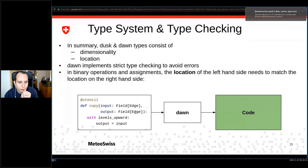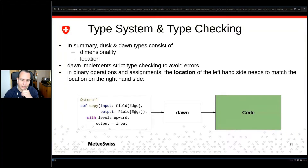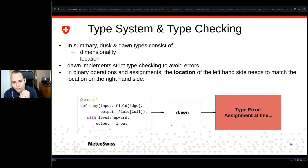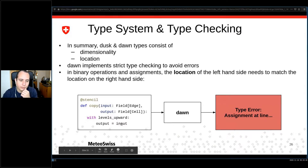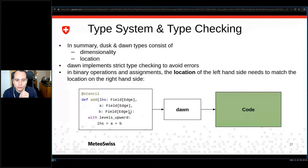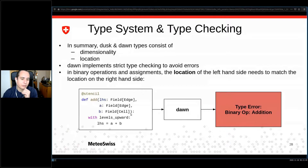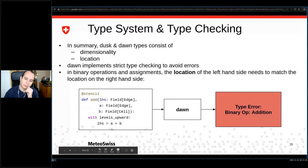Looking at type system examples: the copy stencil with both fields on edges is obviously fine and Dawn will accept it. If we try the same thing with a cell field assigned to an edge field, we get a type error: 'assignment at line X is inconsistent.' Here's a slightly more complex example: adding two fields and assigning to a left-hand side — if all types match, Dawn emits code happily. However, you're not allowed to add fields on different location types; Dawn will report a type error in a binary operation.